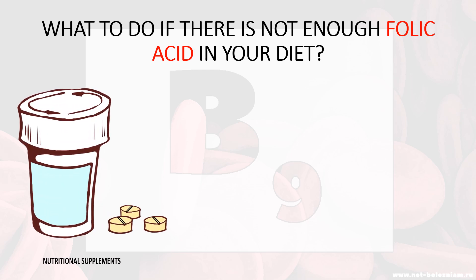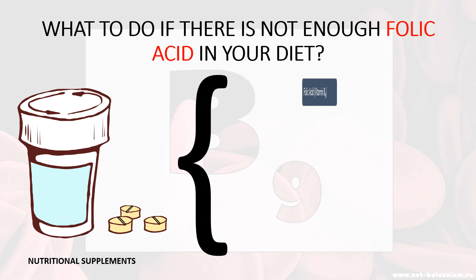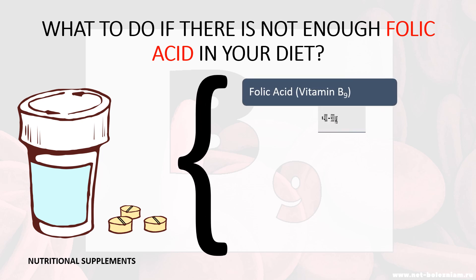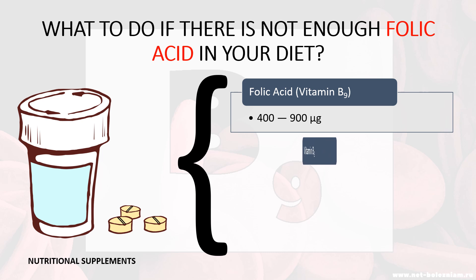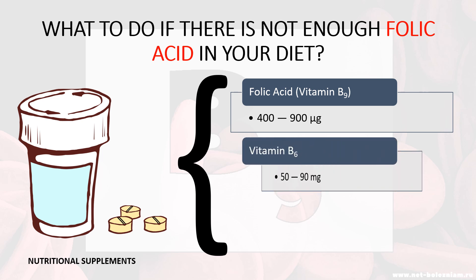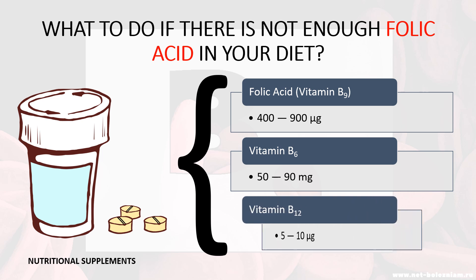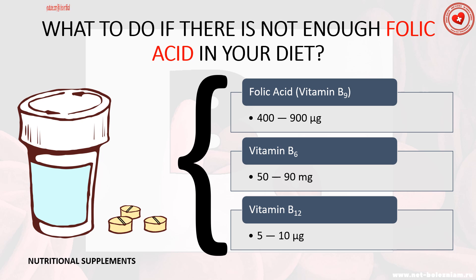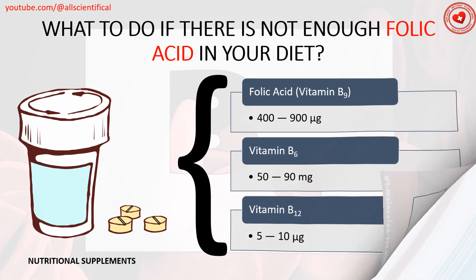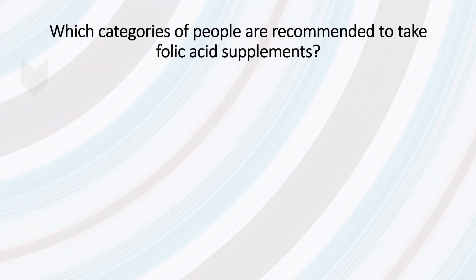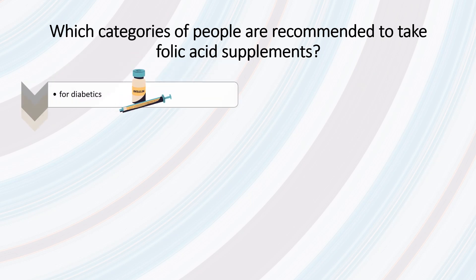What to do if you don't have enough folic acid in your diet? If you cannot meet the recommended daily intake of 400 micrograms of folic acid through your diet, you can take a supplement containing 400–900 micrograms of folic acid, 50–90 micrograms of vitamin B6, and 5–10 micrograms of vitamin B12.